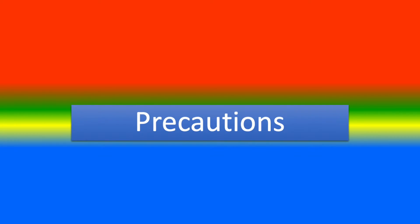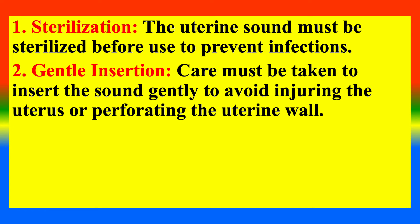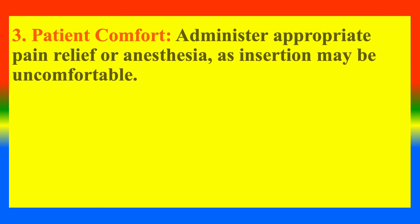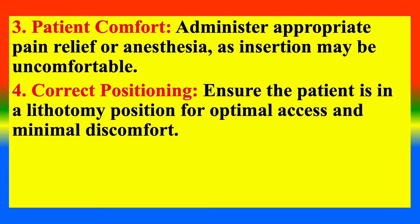Precautions include: first, sterilization — the uterine sound must be sterilized before use to prevent infections; second, gentle insertion — care must be taken to insert the sound gently to avoid injuring or perforating the uterine wall; third, patient comfort — administer appropriate pain relief or anaesthesia as insertion may be uncomfortable; and fourth, correct positioning — the patient should be in the lithotomy position for optimal access and minimal discomfort.